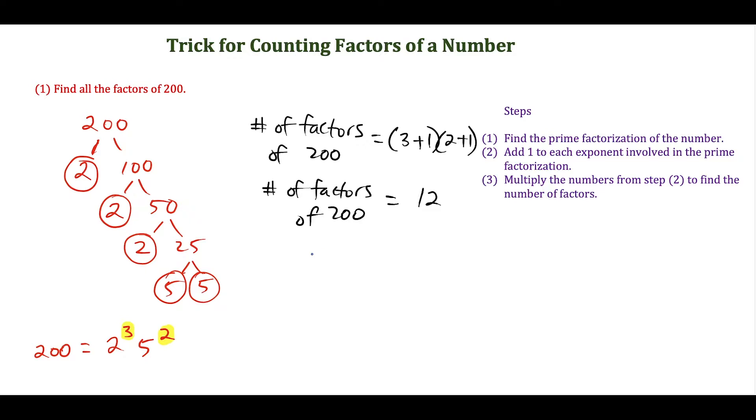Let's start looking for them. We have 1 times 200, then 2 goes into 200 one hundred times. 3 doesn't go into 200 because the sum of the digits, 2 plus 0 plus 0, is not divisible by 3. Then we have 4 times 50 equals 200. We try 5, and we have 5 times 40. If I was convinced I'm done here, notice I only have 8 factors found, and I still need to find 4 more. I'd have to keep going.